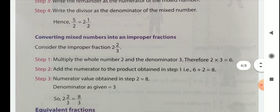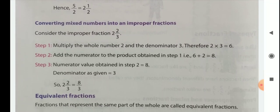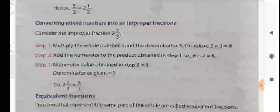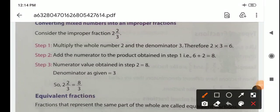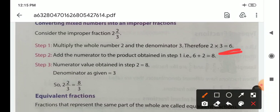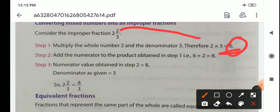Then converting mixed numbers into improper fractions. Consider the mixed number 2 whole 2 by 3. Step 1: multiply the whole number, that is 2, and the denominator, that is 3. Therefore we get 2 multiplied by 3 equals 6. Step 2: add the numerator to the product obtained in step 1. That is 6 plus 2 equals 8.